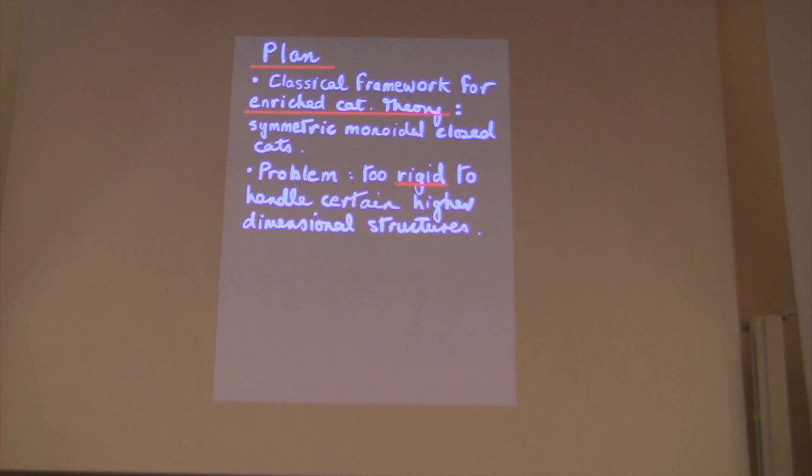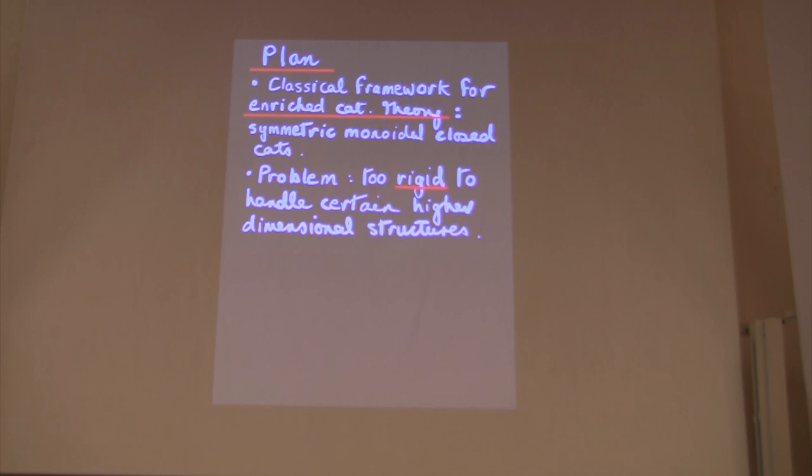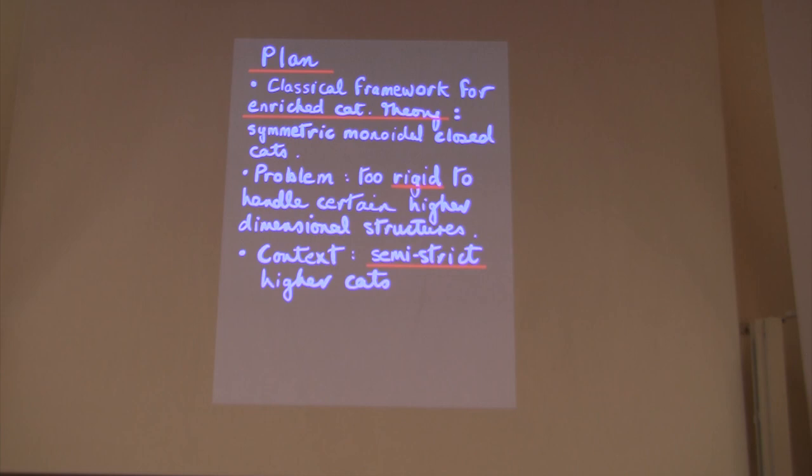So what's it about? It's about enriched category theory. The classical framework for enriched category theory, where everything works very well, is symmetric monoidal closed categories. That's what Kelly's book uses. The problem is that sometimes it's very hard to construct one of these things. What this talk is about is a situation in which you have such a problem, and it's about semi-strict higher categories.